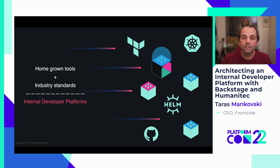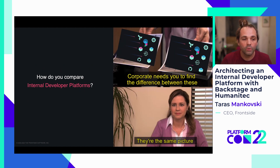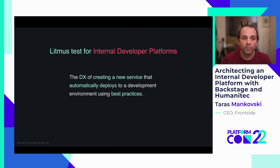Internal developer platforms quite often consist of a combination of homegrown tools that organizations are trying to replace with industry standards, and industry standards that they are already adopting. Because so many tools are being used and shared across different organizations, even though the combination of these tools is unique, it can be difficult to know how an internal developer platform is doing. In looking at different internal developer platforms, we found a simple litmus test you can use to check the capability of an internal developer platform.